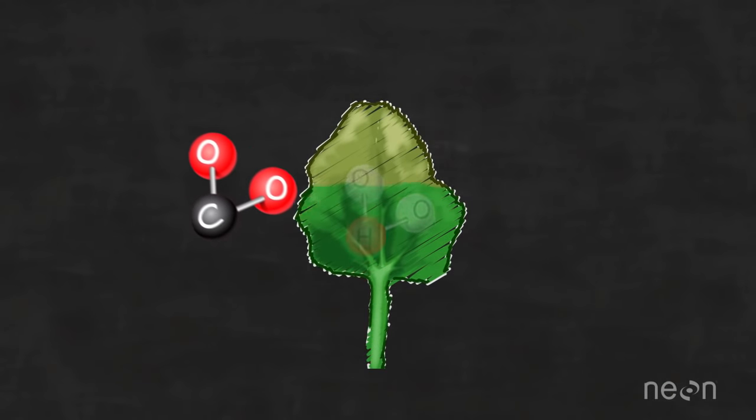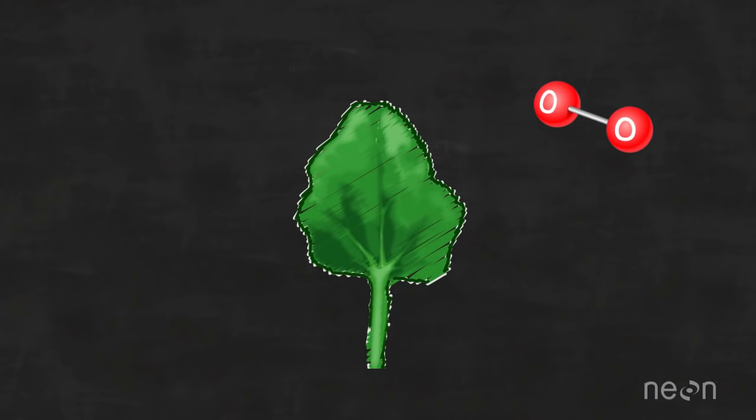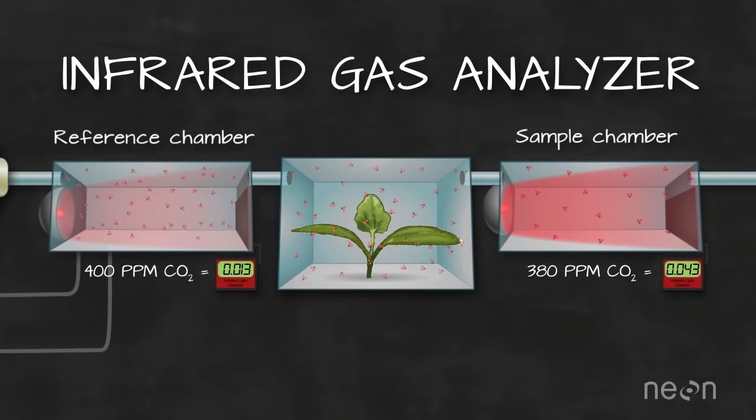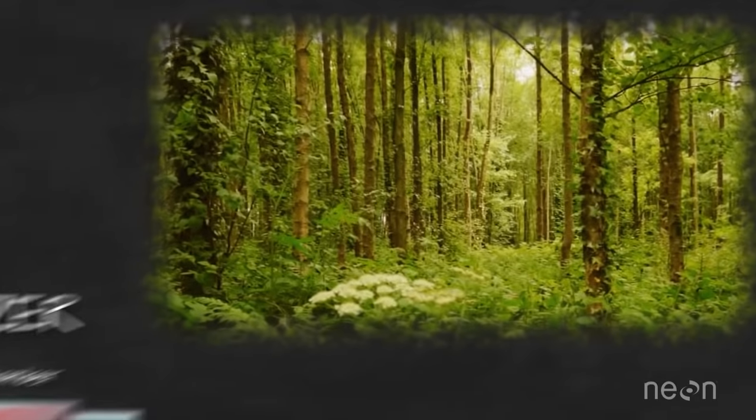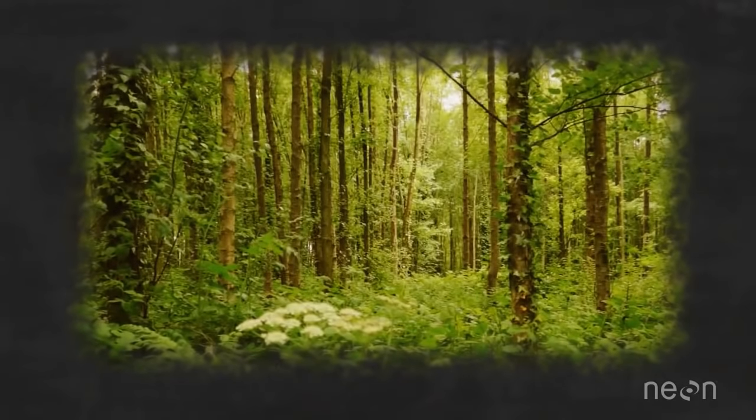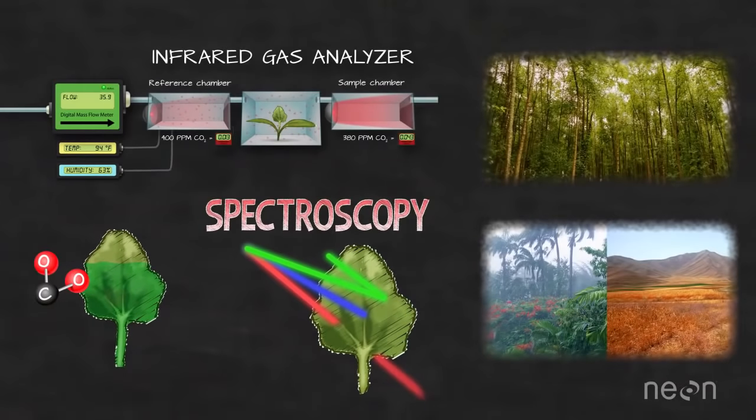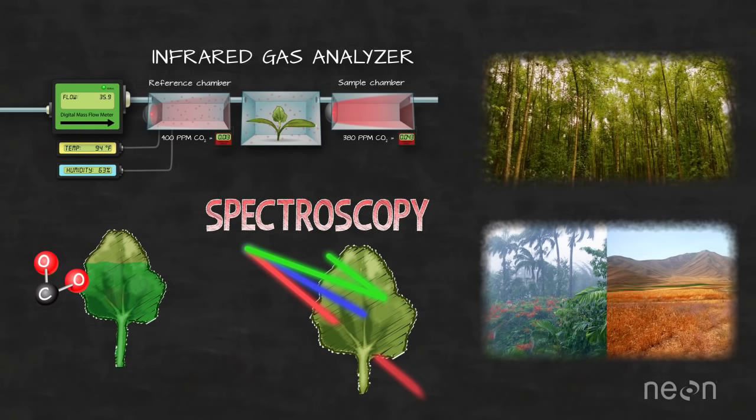And so to sum this all up, plants use CO2 to perform photosynthesis to grow and provide oxygen. We can measure CO2 uptake with spectroscopy or light measures using an infrared gas analyzer. These measurements can help us understand both how healthy plants are in an ecosystem and also how changes in climate affect plant growth. And that, my friends, is how and why we measure photosynthesis.